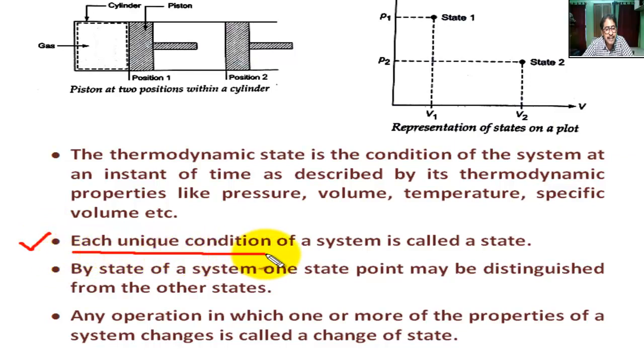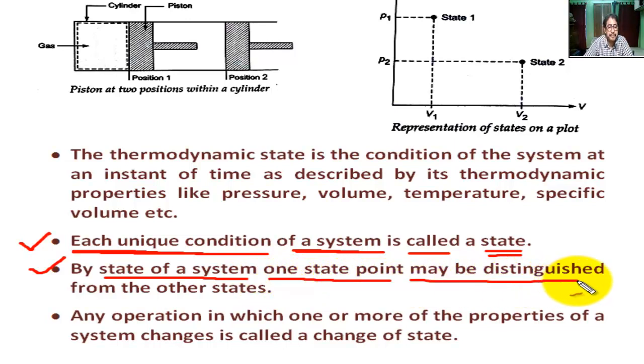Each unique condition, each individual condition of a system at any moment, is called a state. By state of a system, one state point may be distinguished or separated from another state. Any operation in which one or more properties of a system changes is called a change of state.